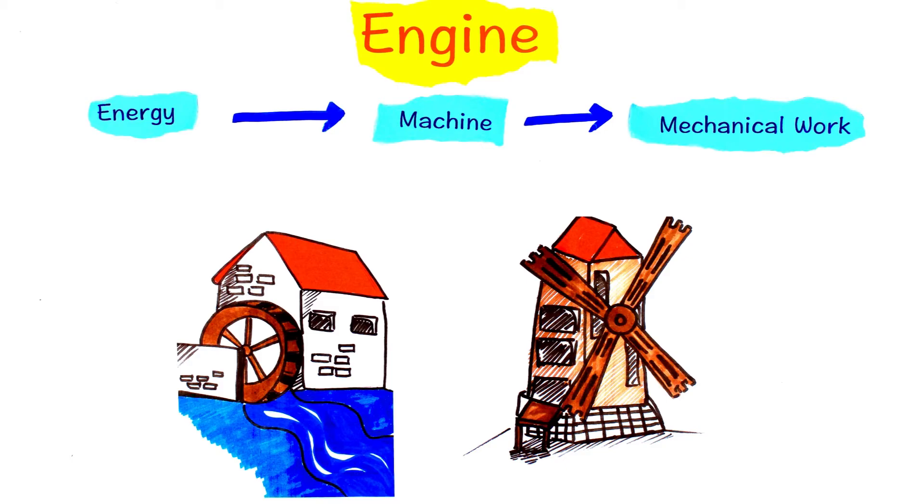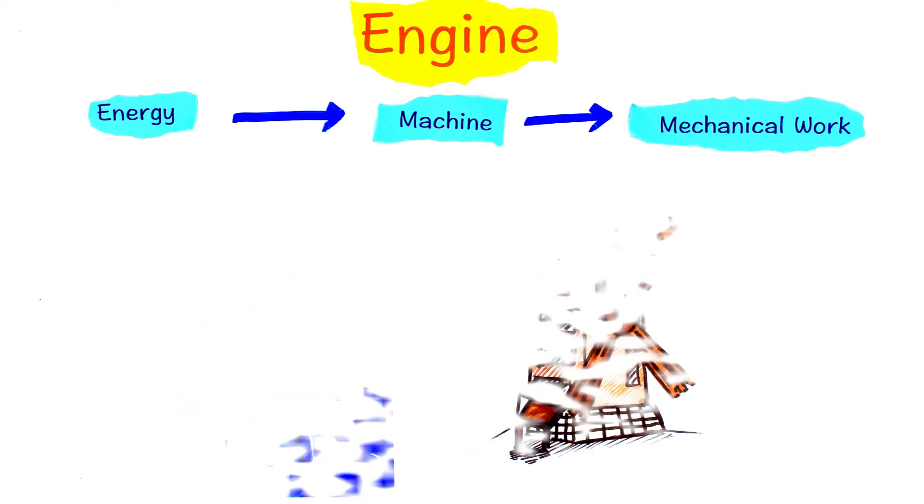But they are limited by the geographical location and the weather. You have to be near a water stream or in a windy location in order to use their power. So again, humans started to look for another source of energy that they can use anywhere they want. So they started to experiment with steam as a source of energy.